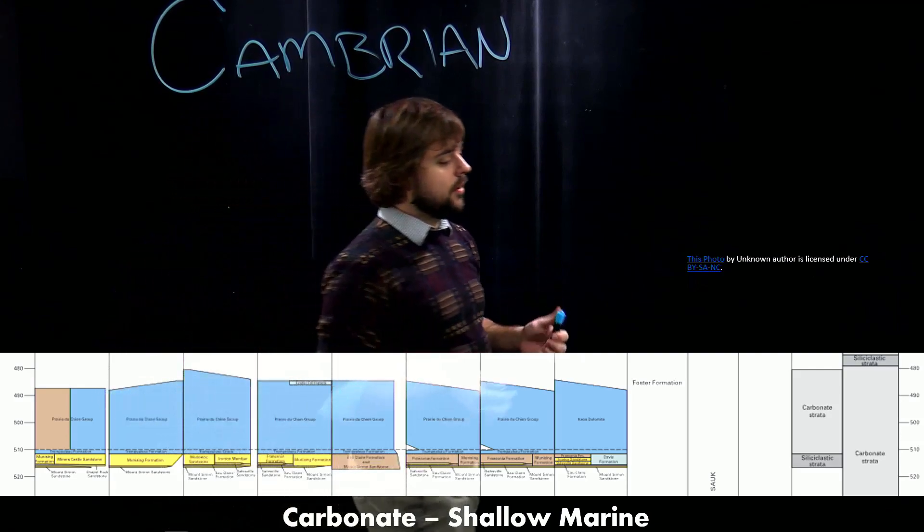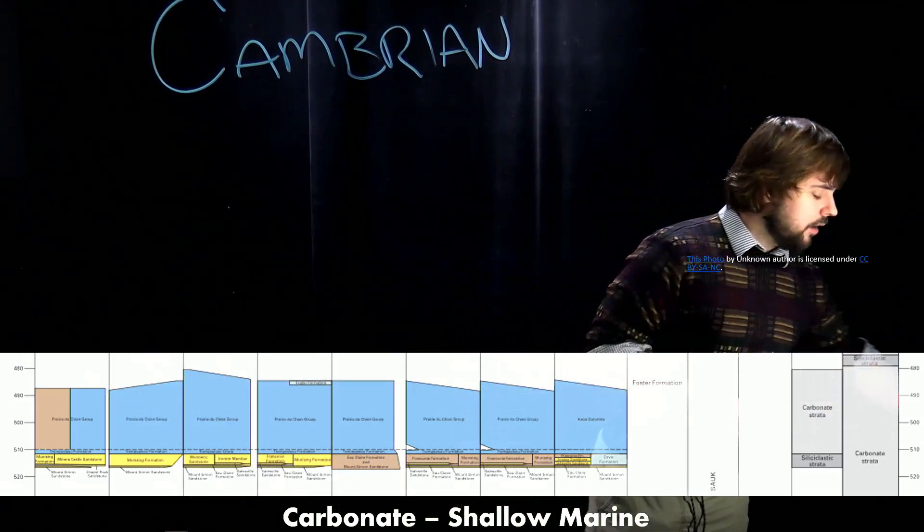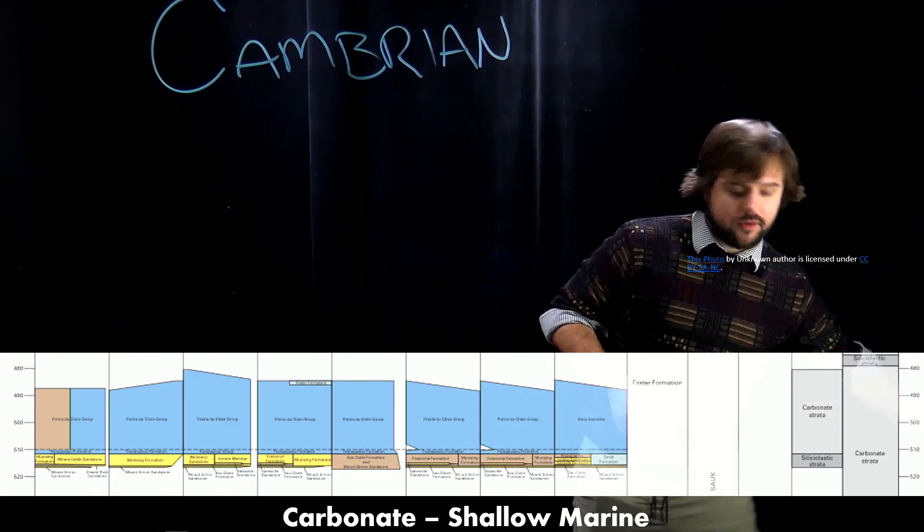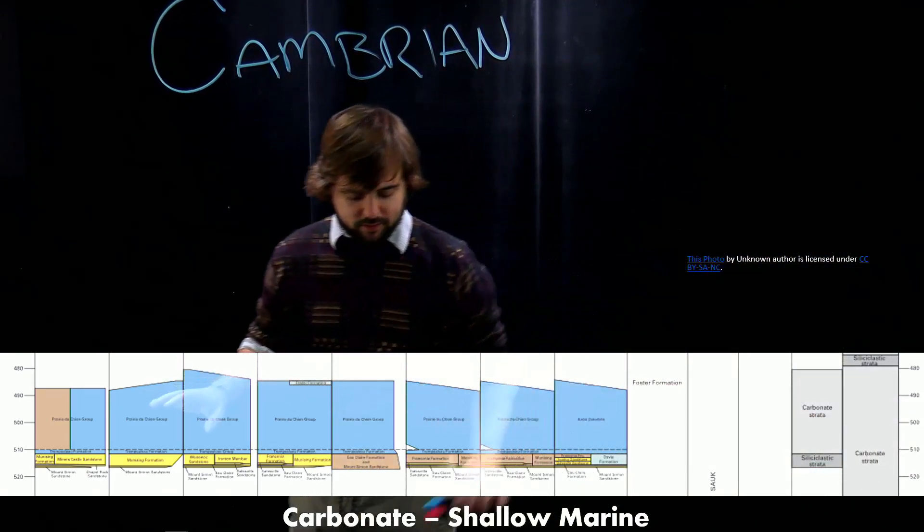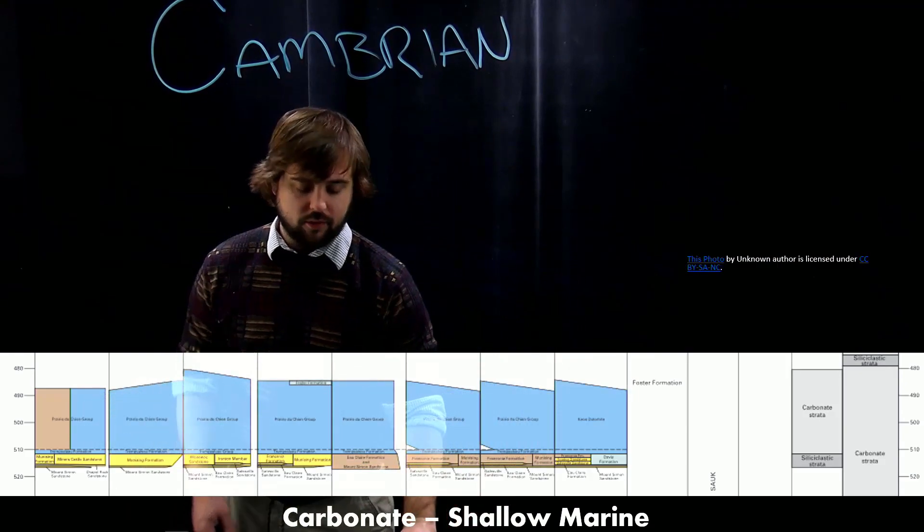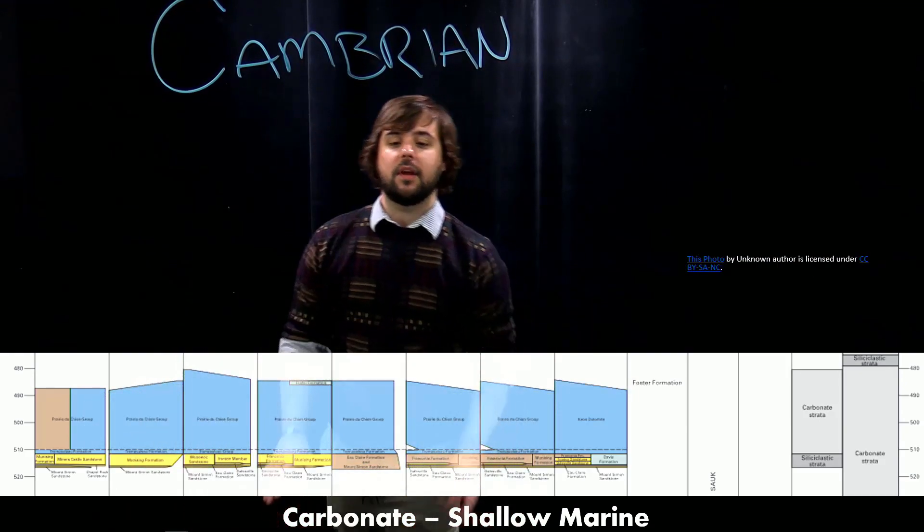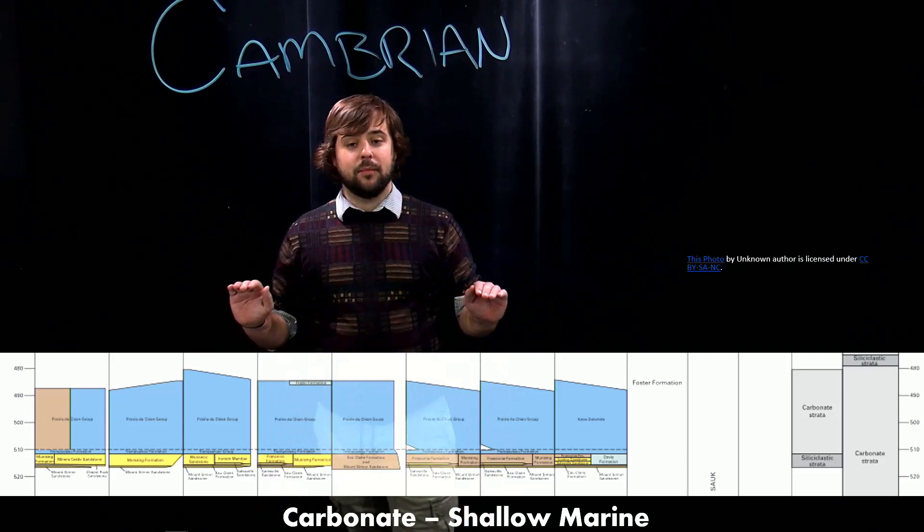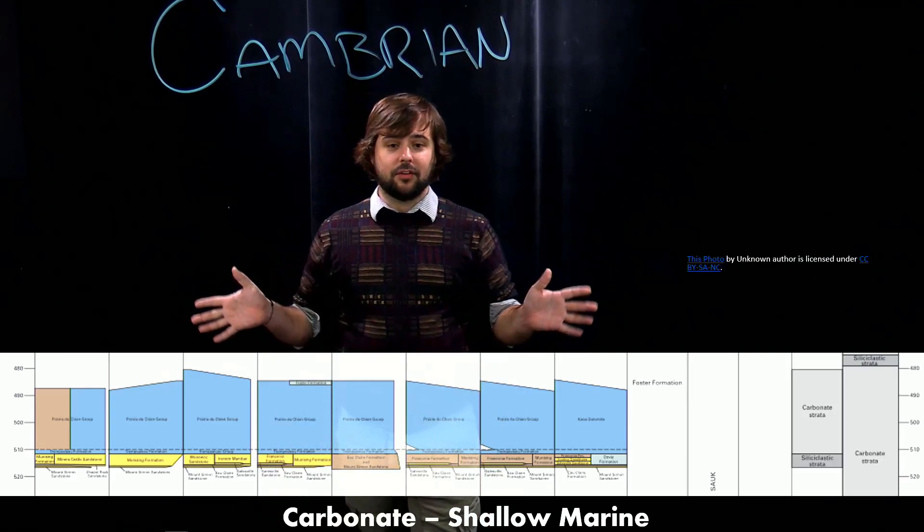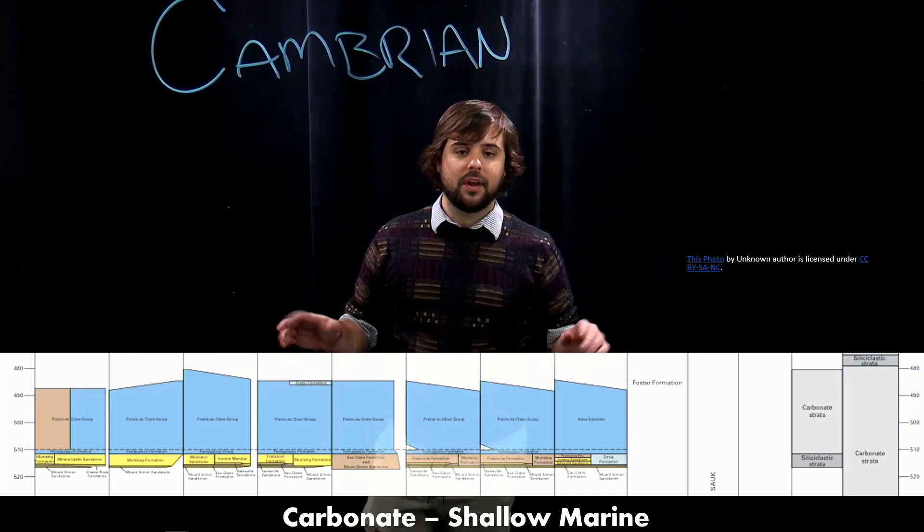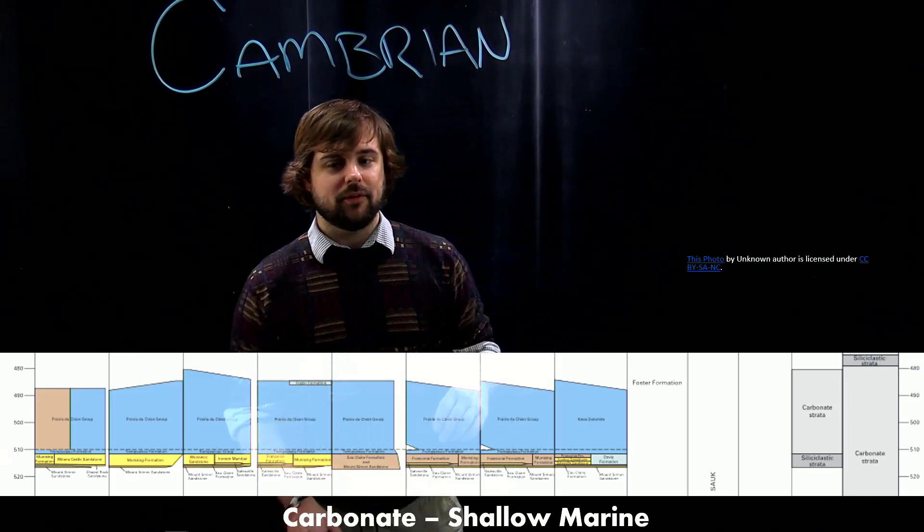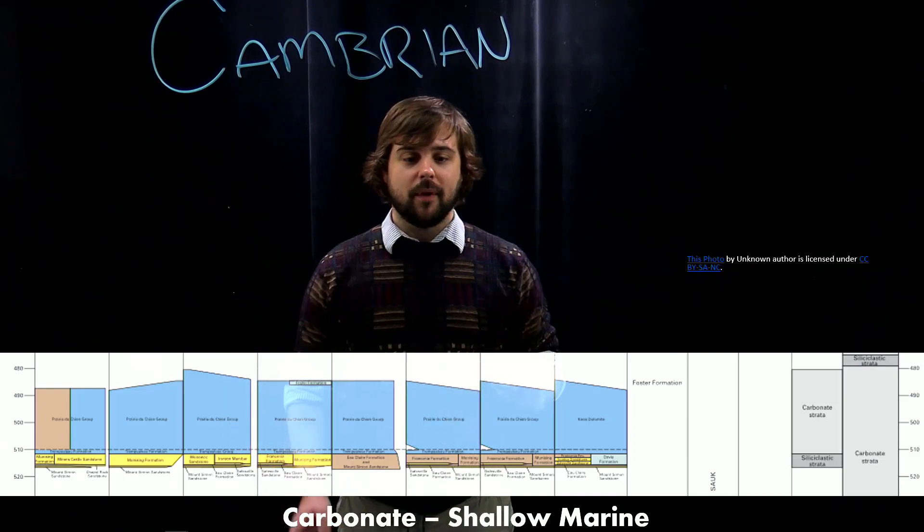So when you think about the Cambrian of Michigan, think about a shallow sea that spread across Paleozoic North America. And in Michigan in particular, there's tons of little critters and stuff that lived around there, called it home. It was a warm, shallow, tropical to subtropical sea. The perfect spot for carbonate rocks to form.